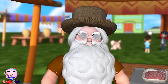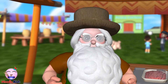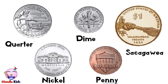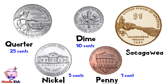What's the value of each of those coins? A quarter is worth 25 cents. A dime is worth 10 cents. A nickel is worth 5 cents. A penny is worth 1 cent. And a Sacagawea is worth a dollar.